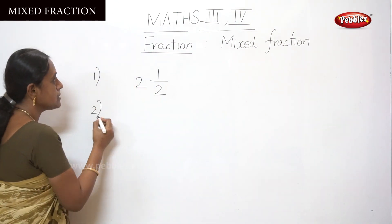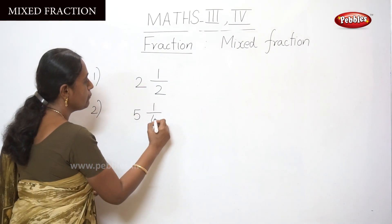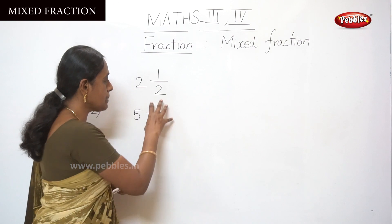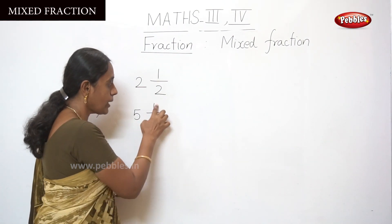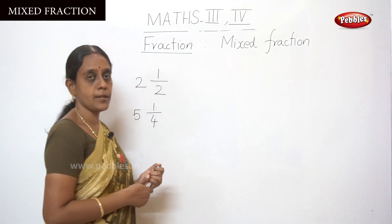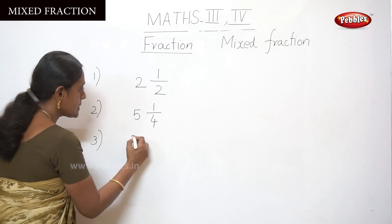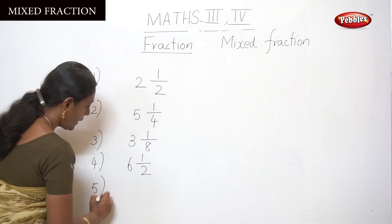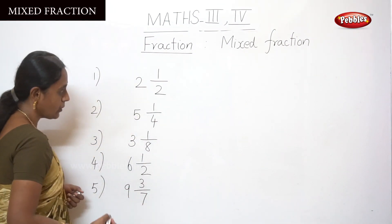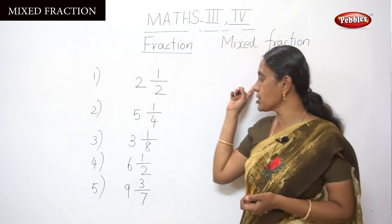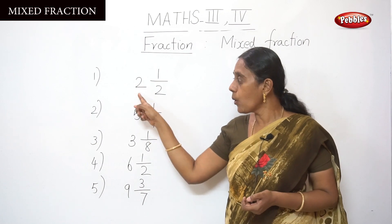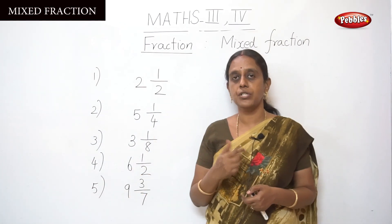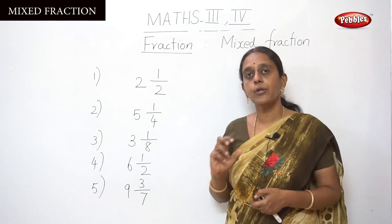One more example of mixed fraction: 5 and 1 by 4. Here, 5 is the whole number and 1 by 4 is a proper fraction. So 5 and 1 by 4 is called a mixed fraction. A few more examples: 3 and 1 by 8, 6 and 1 by 2, and 9 and 3 by 7. All these examples show mixed fractions because each has a whole number — 2, 5, 3, 6, and 9 — combined with a proper fraction.